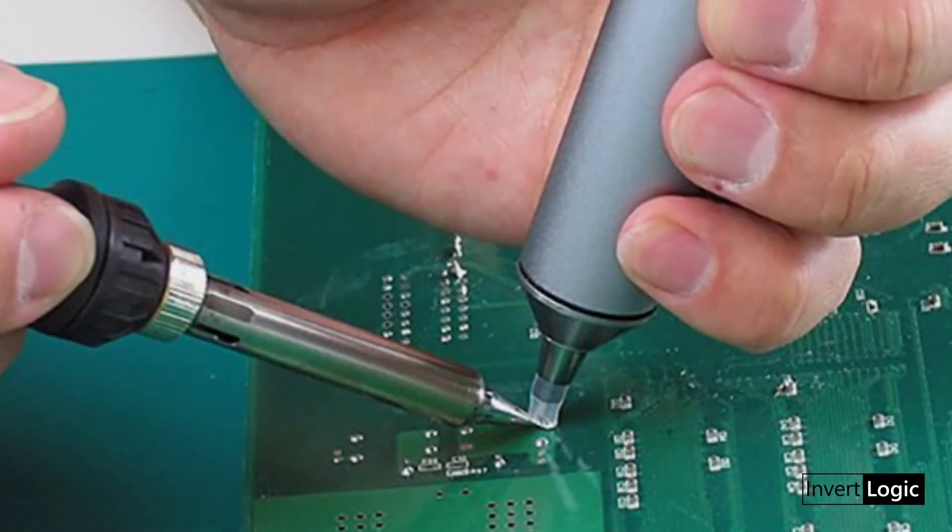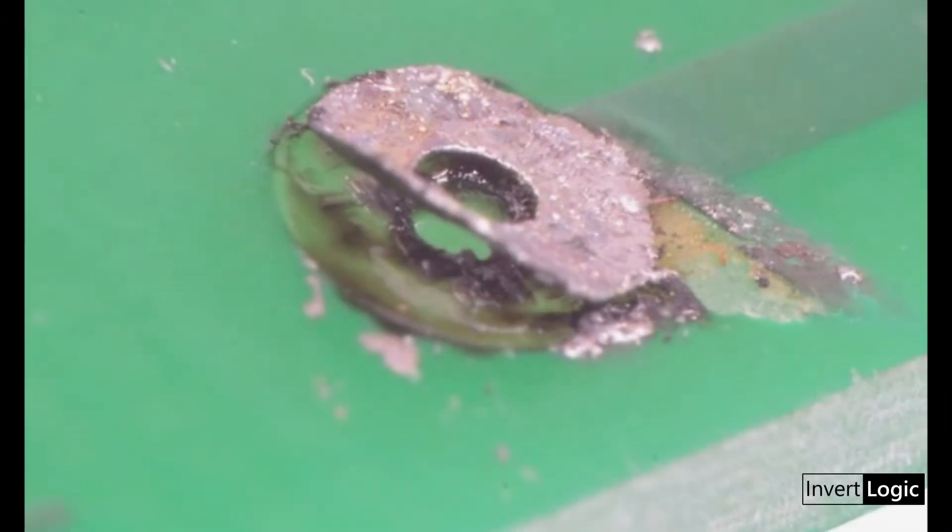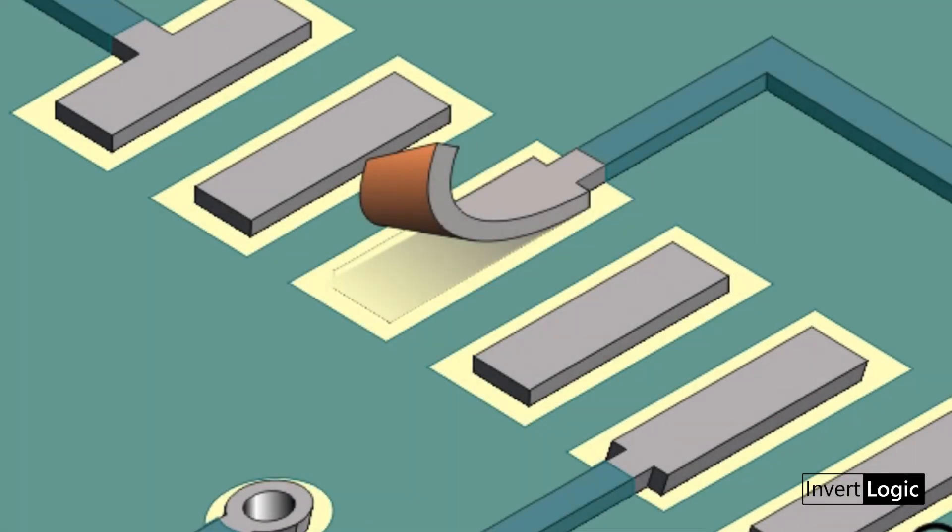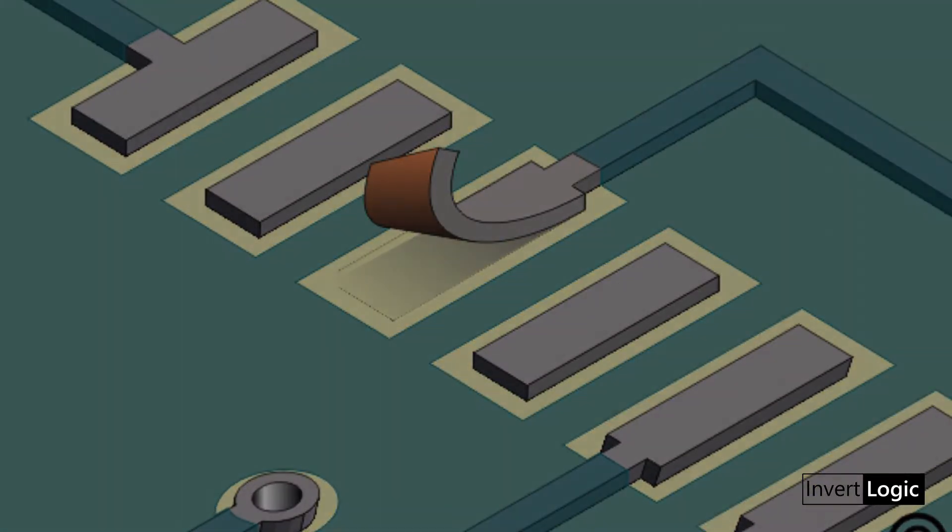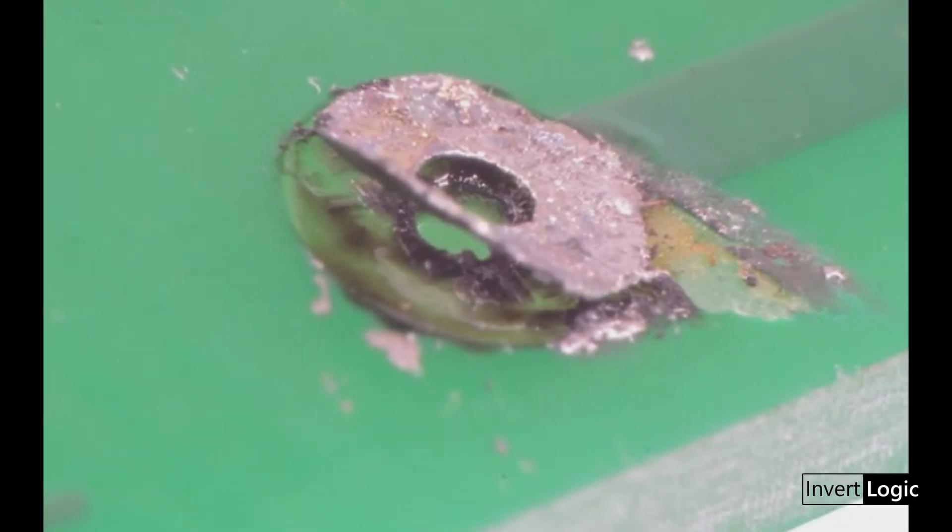Use a solder suction pump or soldering wick to help you. But do not put force on the component legs while doing so, as too much heat and force can remove the trace from the PCB and damage it. This happens more frequently when the board gets too hot at one point. So avoid this mistake.